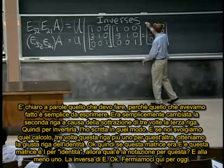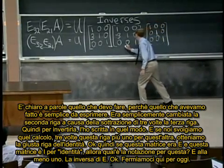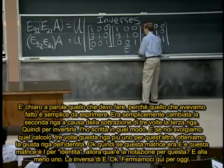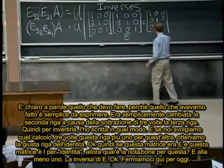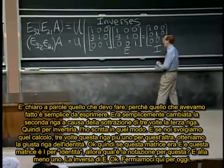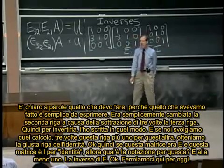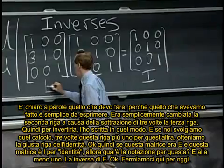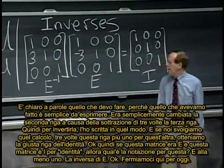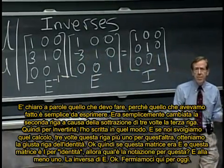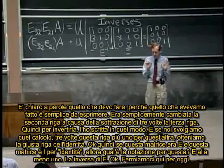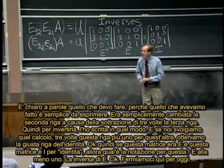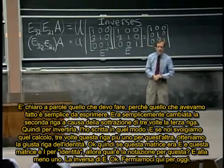OK. So inverses are, and so if this matrix was E and this matrix is I for identity, then what's the notation for this guy? E to the minus one, E inverse. OK. Let's stop there for today. That's a little jump on what's coming on Monday. So see you Monday.